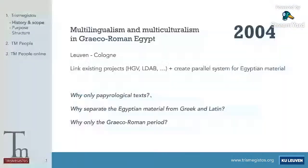Trismegistos started out in 2004. It was created during a project called Multilingualism and Multiculturalism in Greco-Roman Egypt, a collaboration between KU Leuven in Belgium and the University of Cologne. To study this subject, Marc Depau, the project director, realized that an integrated system was needed to overcome the disciplinary fragmentation that exists — between people specialized in Greek Papyrology, Demotic Papyrology, Coptic Papyrology, Egyptologists, and so on.